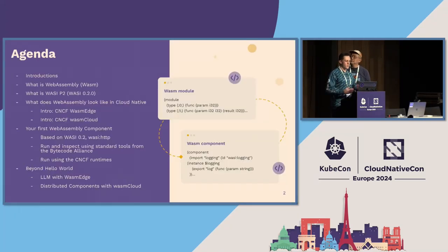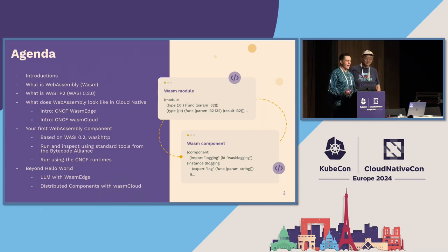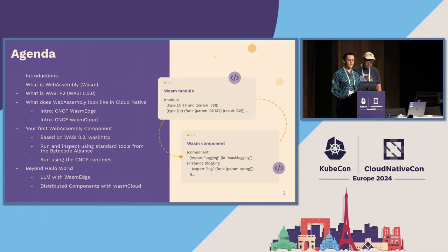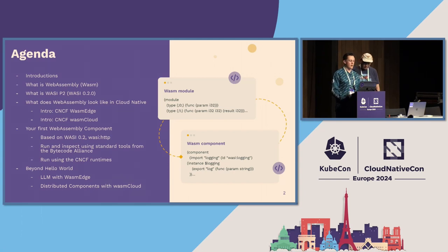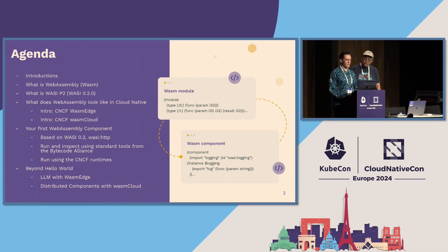Before we go over the agenda and really get into today, let's do some introductions. I'm Brooks Townsend, a senior software engineer at Cosmonic. I've been working on the project WasmCloud, which is an application platform in the CNCF, for just over four years. I've been doing backend WebAssembly things since 2019. I came from the Kubernetes background, worked on a platform called Critical Stack, which was also open source. My entire career has been open source — Kubernetes and cluster provisioning to running WebAssembly.